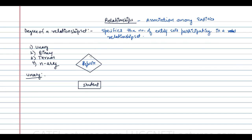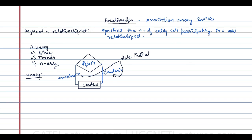In this unary relationship, the members of the relationship are students. We have 'members' and 'leaders' — both indicate roles for the student, called role indications. Students who are members of a certain group report to the students who are leaders of that group. Leaders are also chosen from students, and members are also chosen from students.